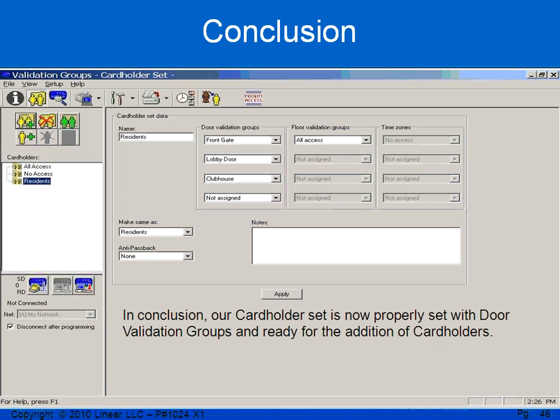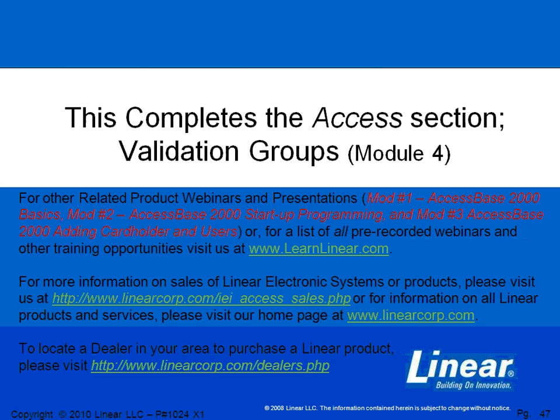In conclusion, our cardholder set is now properly set with door validation groups and ready for the addition of cardholders. This completes Module 4, Validation Groups. My name is Paul Jones. Have a great day.